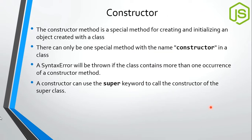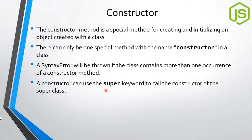The constructor method is a special method for creating and initializing an object created with the class. There can only be one method named constructor in a class. JavaScript doesn't support function overloading, so that also applies to constructors — multiple constructors cause a syntax error. Just like in Java, we use the super keyword to call the constructor of a parent class or superclass.